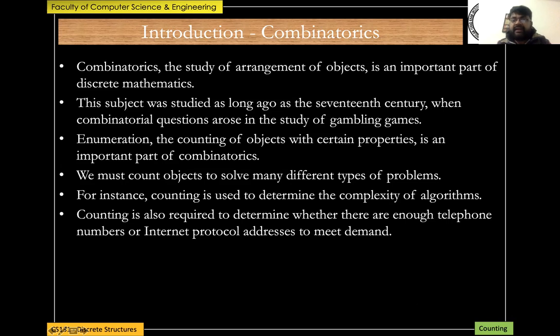Counting is also required to determine whether there are enough telephone numbers or internet protocol addresses to meet a certain demand. For example, if a city has one million residents, then you at least require a seven-digit phone number, otherwise not each resident can have a different phone number. These kinds of examples require counting, and counting is all that you simply do. You can come up with how many phone numbers are required, how many digits are required to solve a particular problem.